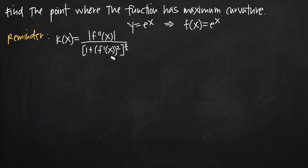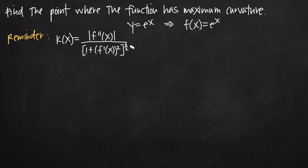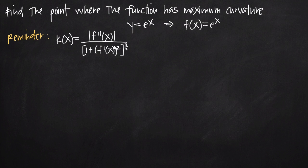In our formula, we're going to take the first derivative of f of x to get f prime of x, square that, add 1 to it, and then take that whole value and raise it to the 3 halves power. In our numerator, we need to find the second derivative and take its absolute value. So we're really just working from the inside out, finding each component and then plugging them into our formula.